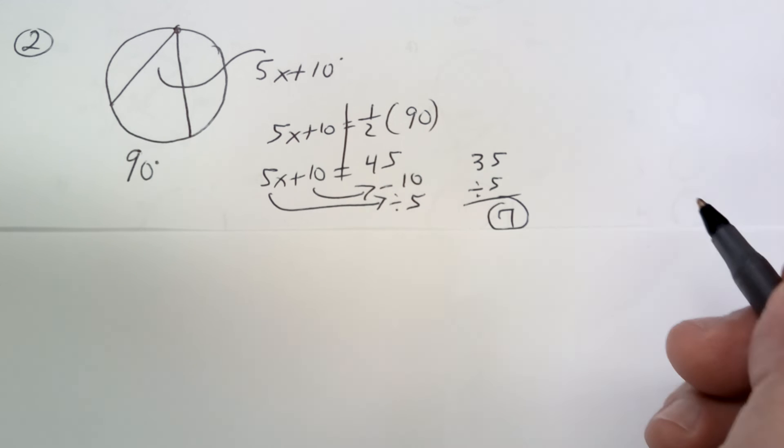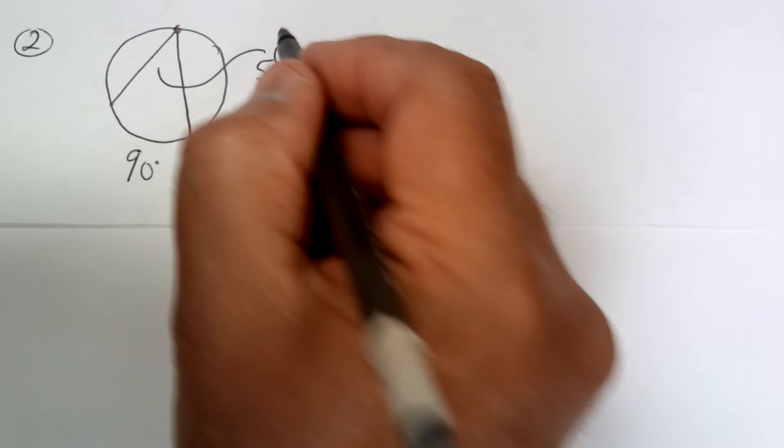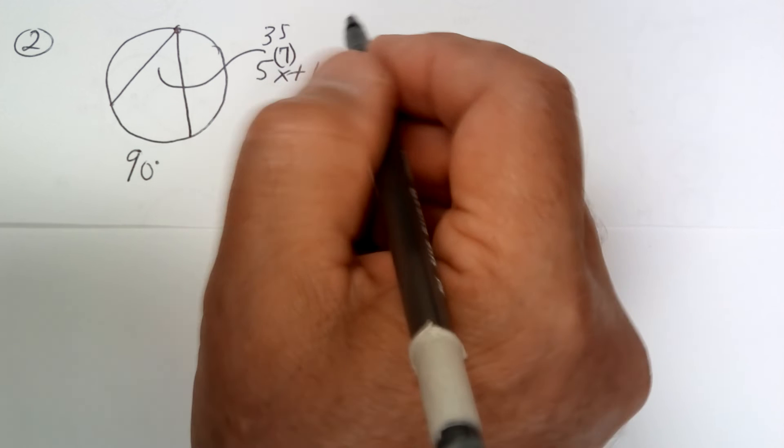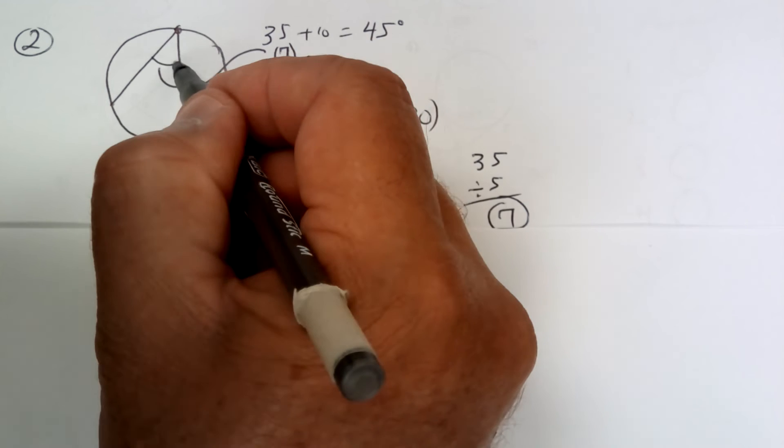So x equals 7. Now the angle would be 5 times 7 is 35 plus 10, which is 45. And we should know that anyway, because it's half of 90.